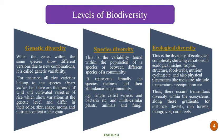There are different levels of biodiversity. The first one is genetic diversity, the second one is species diversity, and the third one is ecological diversity. Genetic diversity refers to when genes within the same species show different versions due to recombination. That is called genetic variability — meaning there is variability within a species.